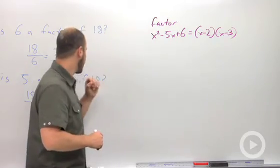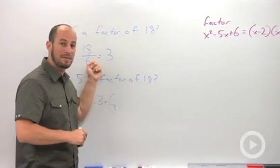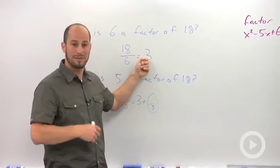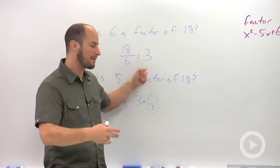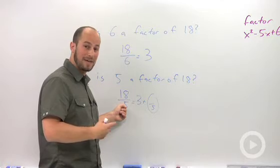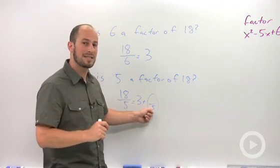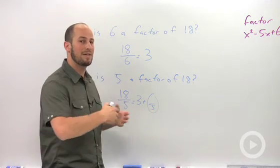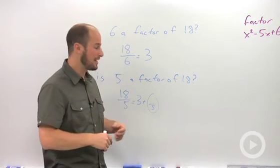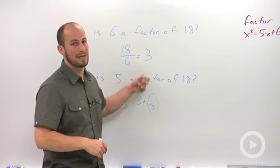Going back to our earlier examples, we knew 6 was a factor because when we divide it, we got 3 with no remainder. We know that 5 wasn't a factor because when we divided it, we had a remainder. Synthetic division is going to tell us the exact same thing. We divide it out - if we have a remainder, it's not a factor. If we don't have a remainder, it is.